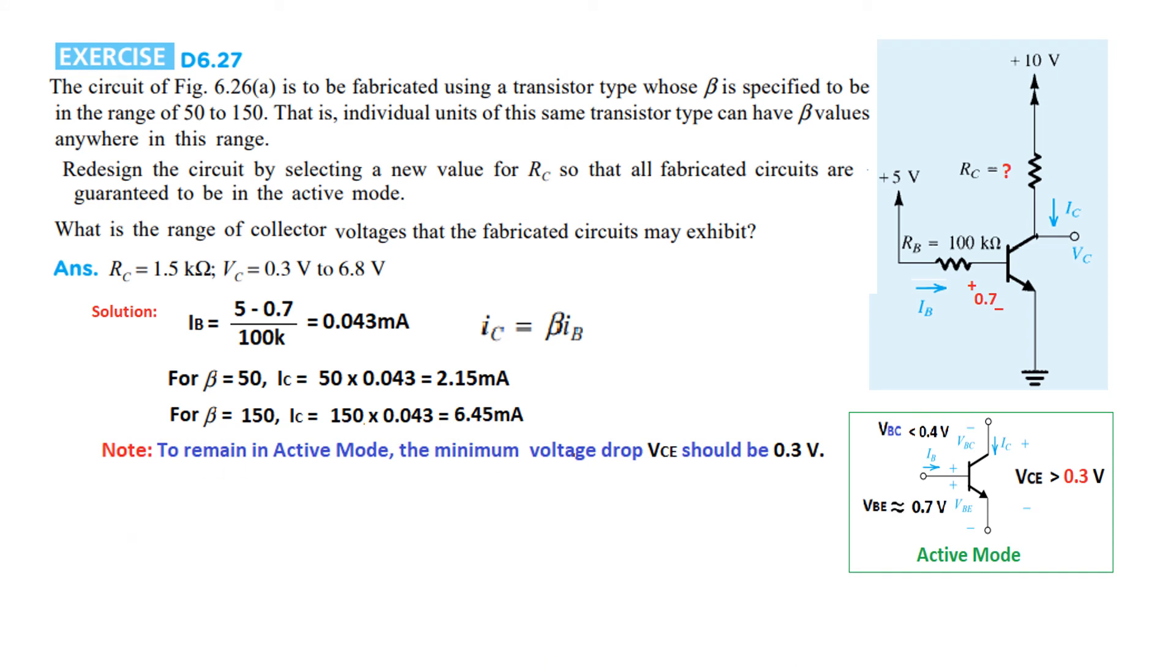To remain in active mode, the minimum voltage drop VCE should be 0.3V. This value of 0.3V is the minimum—it can increase to 0.4, 0.5, 1, 2, 3, whatever, but this is the minimum value.